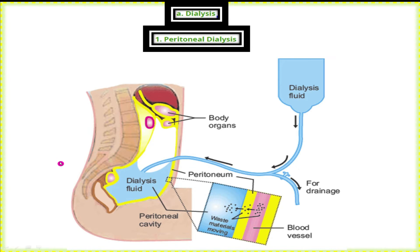In peritoneal dialysis, when the dialysis fluid is placed into the peritoneal cavity, the waste materials from the blood vessels in the peritoneal cavity diffuse out of the blood vessels and into the dialysis fluid within the peritoneal cavity. This allows the waste to be removed from the blood in a different way.